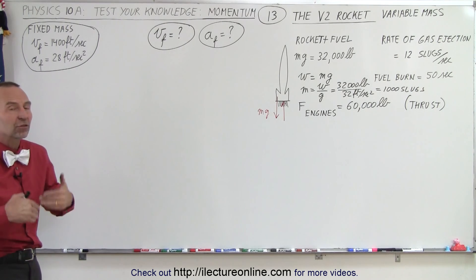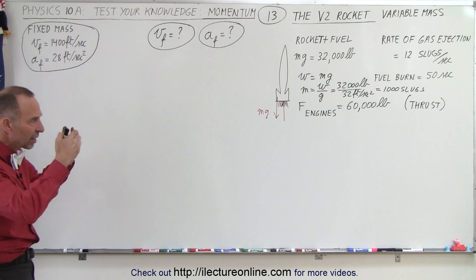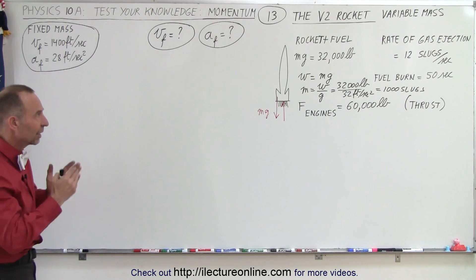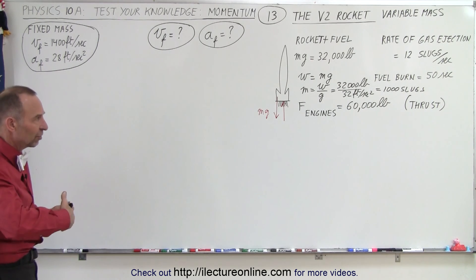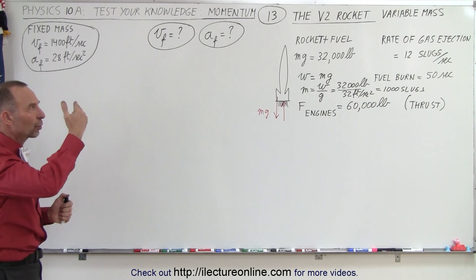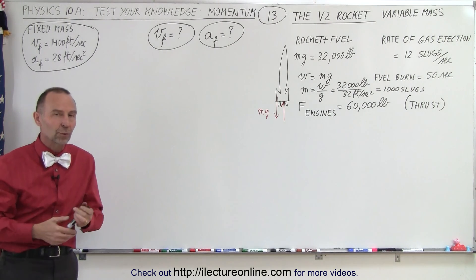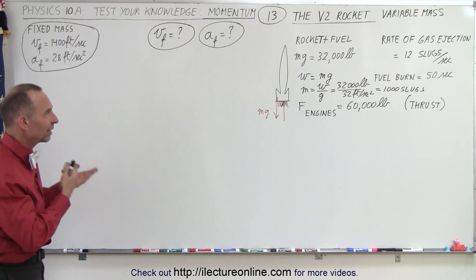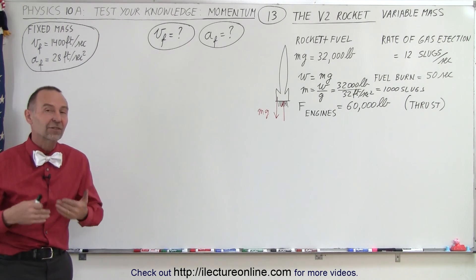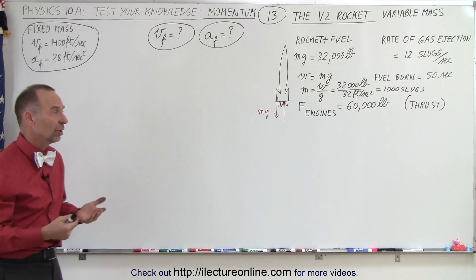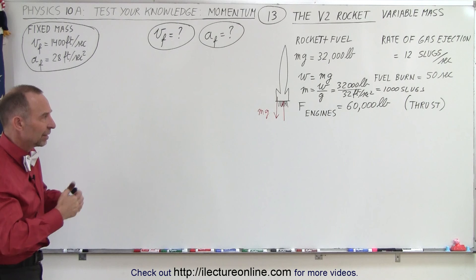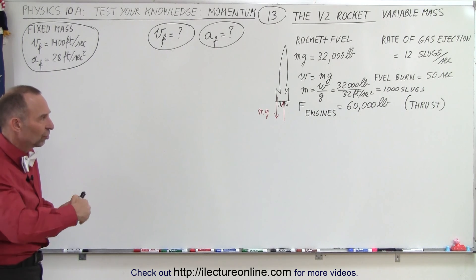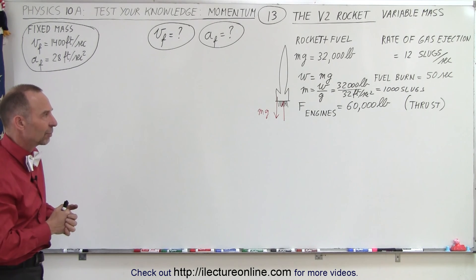But what if we assume now that as the rocket is burning gas, the rocket becomes lighter and lighter, and therefore the velocity will increase more quickly because the acceleration will increase as well. How do we calculate the final velocity and the final acceleration with this new concept that the mass or the weight of the rocket reduces as time goes on?